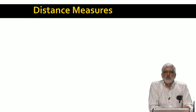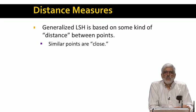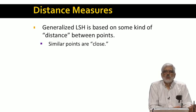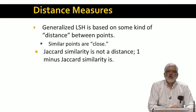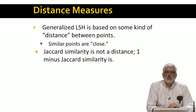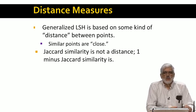We'll begin by introducing the distance measures we need, starting with the formal notion of a distance measure. A distance between points in some abstract space is intended to measure closeness or similarity of the points. The lower the distance, the closer the points, and the more similar they are. Notice that Jaccard similarity is the opposite — it is higher for similar sets, while a distance measure would be lower. One minus the Jaccard similarity is a suitable distance measure.